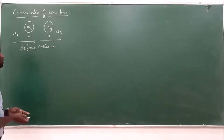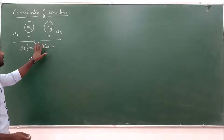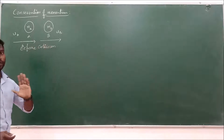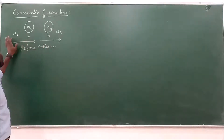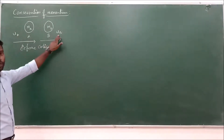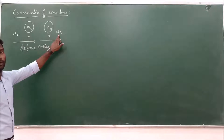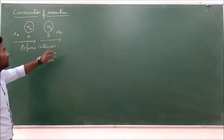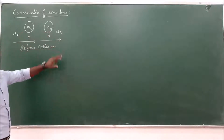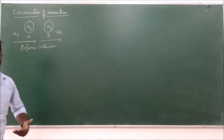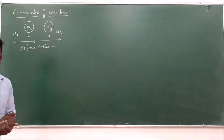Before collision, the two objects are travelling along a straight line, having the initial velocities UA and UB, with different masses MA and MB of the objects A and B.